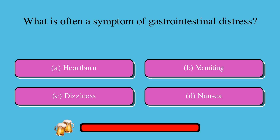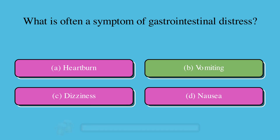What is often a symptom of gastrointestinal distress? A. Heartburn, B. Vomiting, C. Dizziness, or D. Nausea. The correct answer is B. Vomiting.